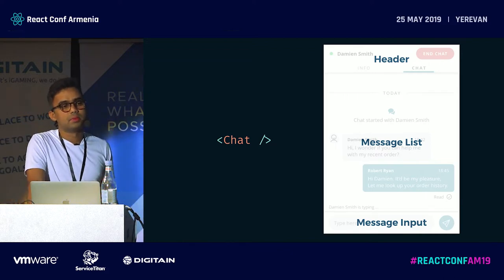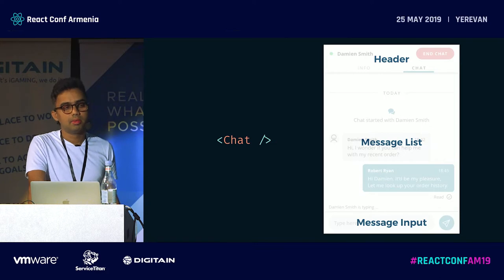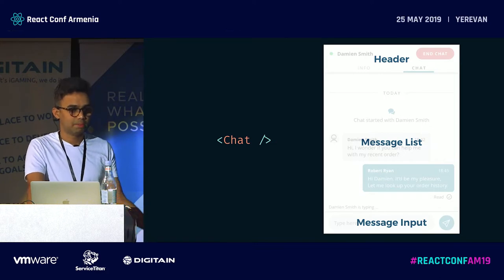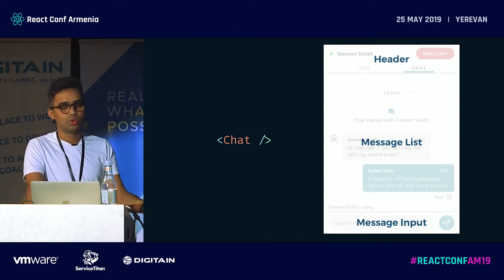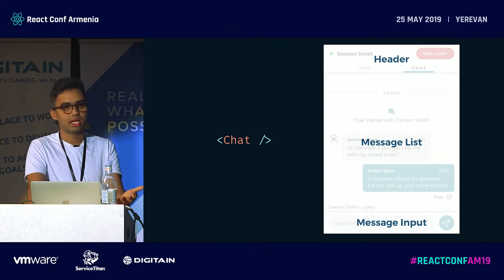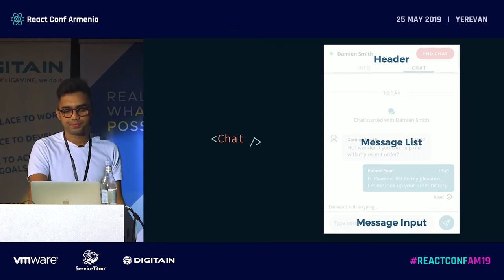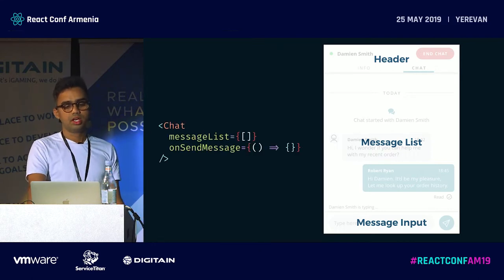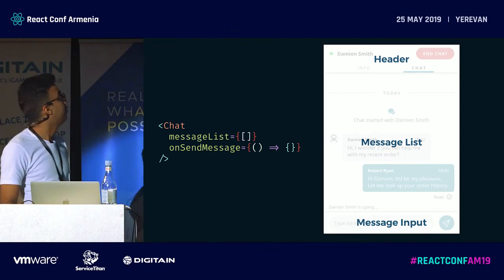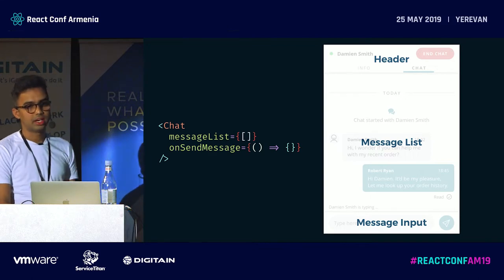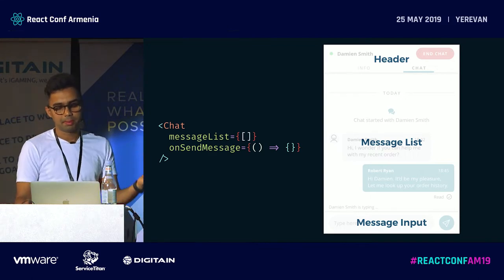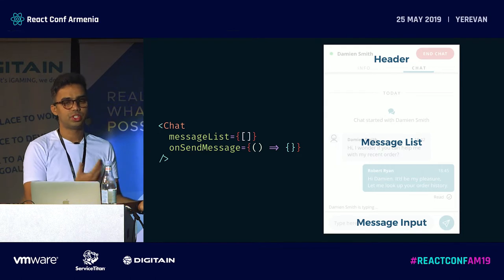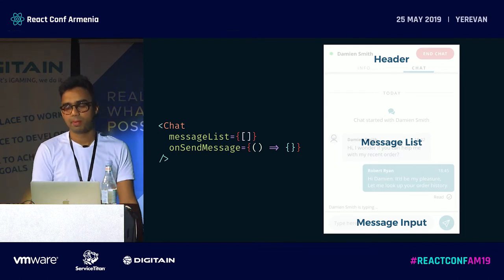But then the consumer comes back and says: give me a prop or an API through which I can get a callback when a message has been typed, and I'll provide the list of messages. You say: cool, I'll create two props — and here that could be an API. It's an interface through which you interact with your application.